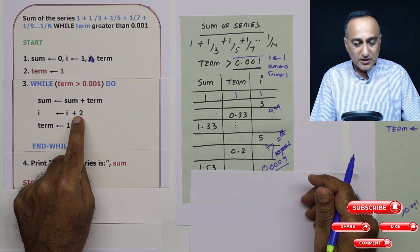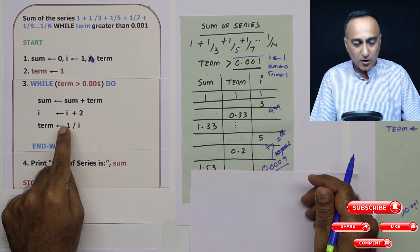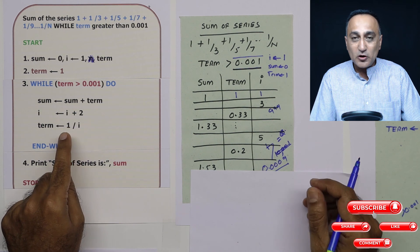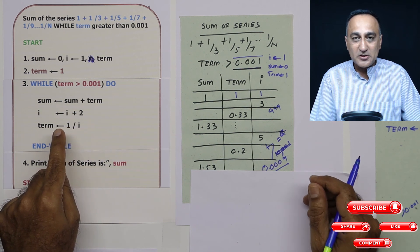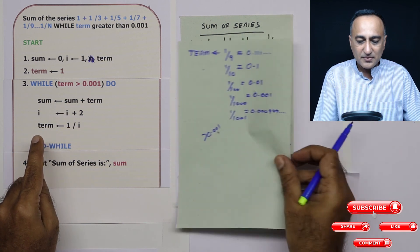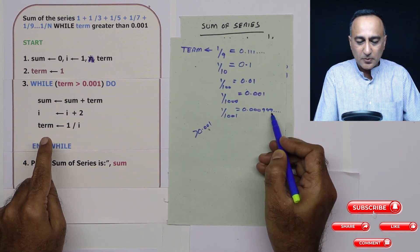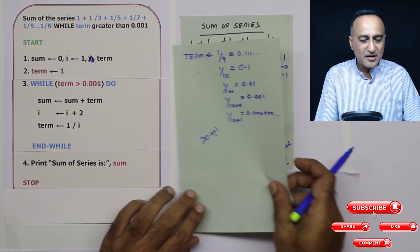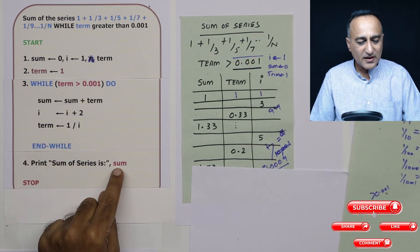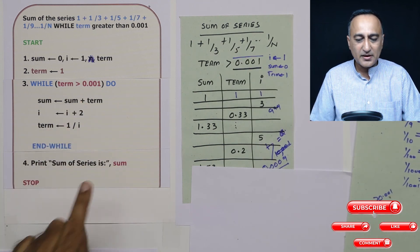When i becomes 1001, 1 upon i or 1 upon 1001 is going to be 0.0009 something like this 0.0009 0099. So this condition fails. Then I'm going to print the sum at this particular stage.